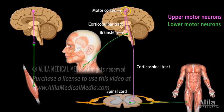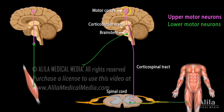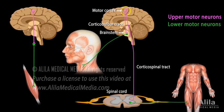The corticobulbar tracts control muscles of the face, head, and neck, and are responsible for facial expression, speech, swallowing, among others. The corticospinal tracts control muscles of the torso and limbs.